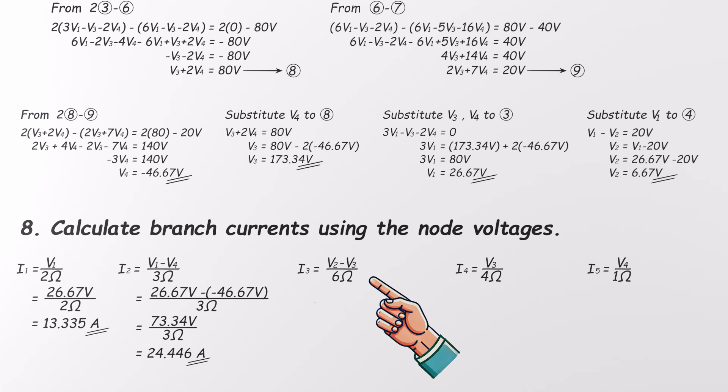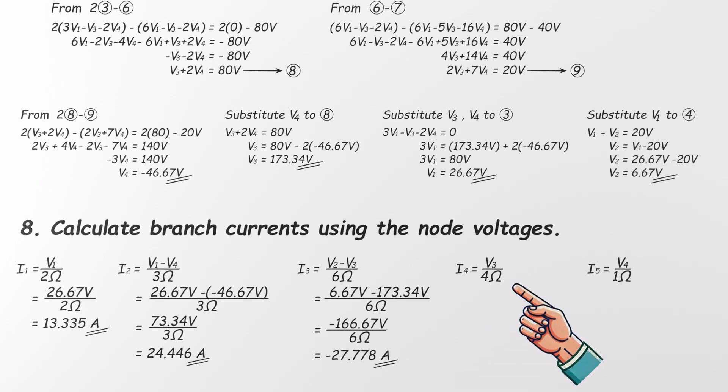Now, for I3, V2 minus V3 divided by 6. So, 6.67 minus 173.34 over 6. That gives negative 27.778 amps. The negative sign just means the current flows opposite to our original guess. No big deal. I4 is simple. V3 divided by 4, 173.34 over 4 equals 43.335 amps. And finally, I5, V4 divided by 1. That's just negative 46.67 amps. Another negative current, same idea, just means it's flowing the other way.